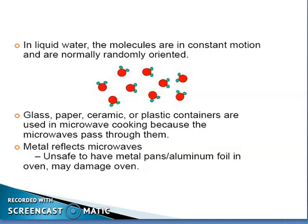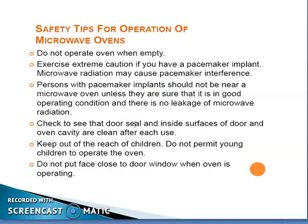Glass, paper, ceramics, or plastic containers are used in microwave cooking because the microwaves pass through them. Metal reflects microwaves, so it is unsafe to have metal pans, aluminum foil, etc. in the oven because it may damage the oven.